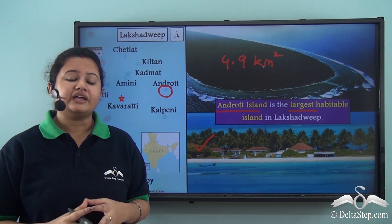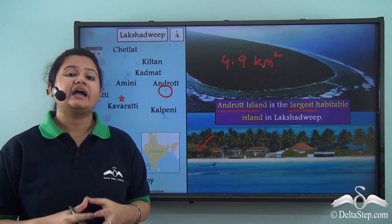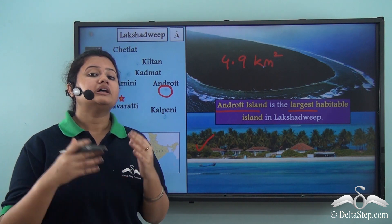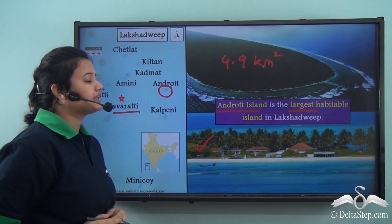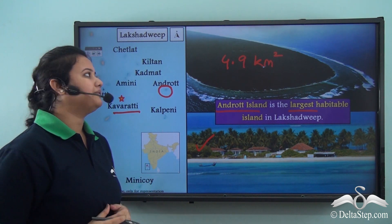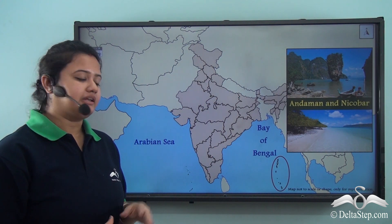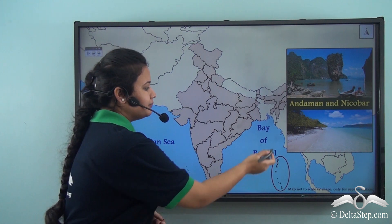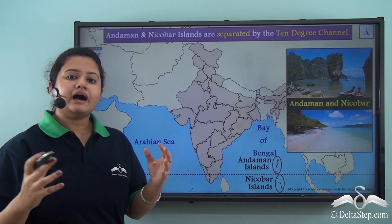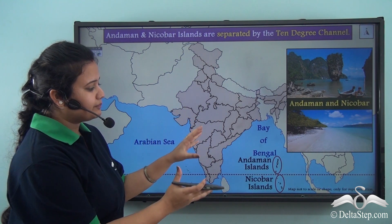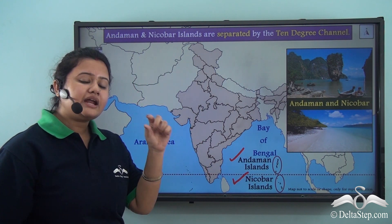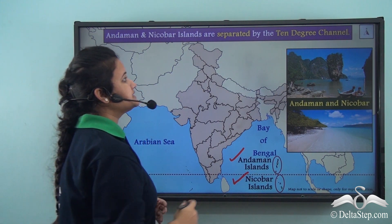To summarize, Lakshadweep is a group of islands lying to the west of mainland India, consisting of 36 coral islands, of which only a few are habitable. Its capital is Kavaratti. Now, turning to another group of islands lying to the east of mainland India amidst the Bay of Bengal — the Andaman and Nicobar Islands. This is actually a group of two separate island chains: the Andaman Islands and the Nicobar Islands, separated by a narrow stretch of water known as the 10 Degree Channel.